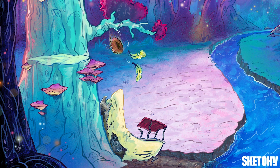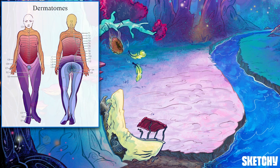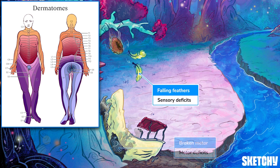With that in mind, an L3 to L4 disc level herniation, for example, would involve the L4 nerve root. The clinical findings of lumbosacral radiculopathy vary depending on the level of the nerve root or roots involved, but generally speaking most patients present with low back pain that radiates or shoots down the leg, with sensory and motor deficits in the distribution of the impinged nerve root. These falling feathers and our boat's broken motor are convenient reminders for sensory and motor impairments associated with lumbosacral radiculopathy.